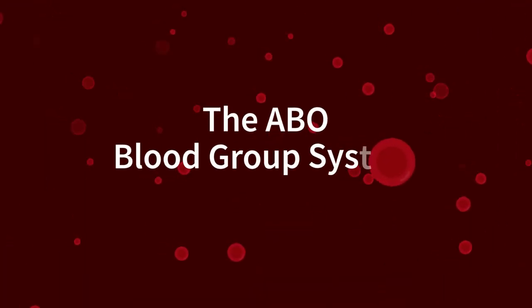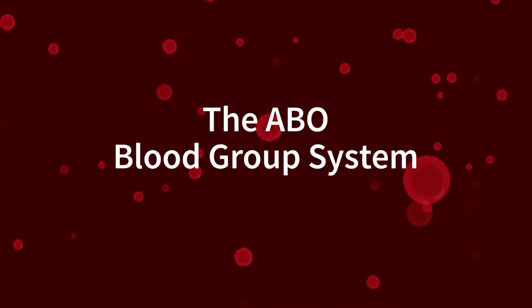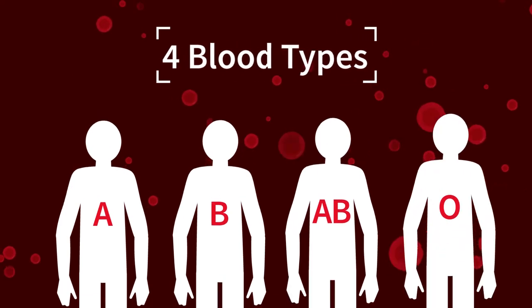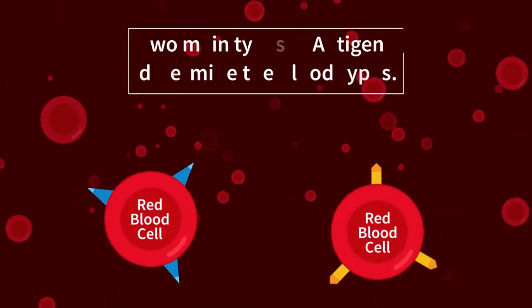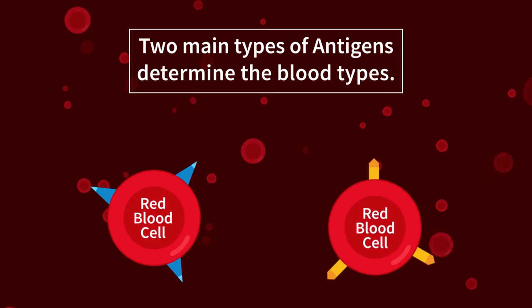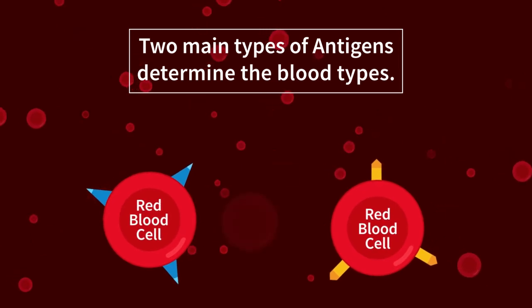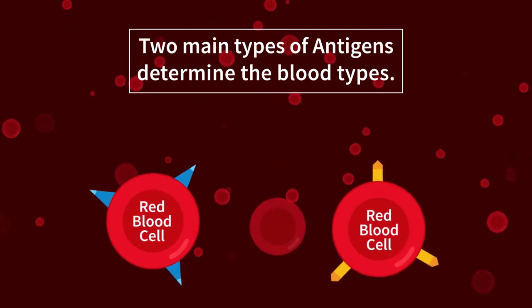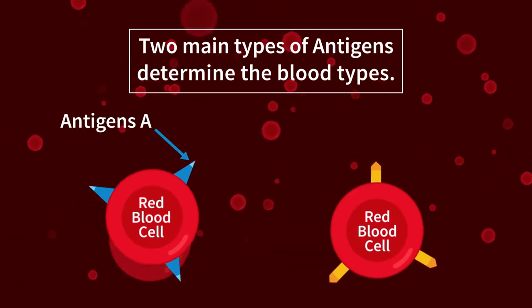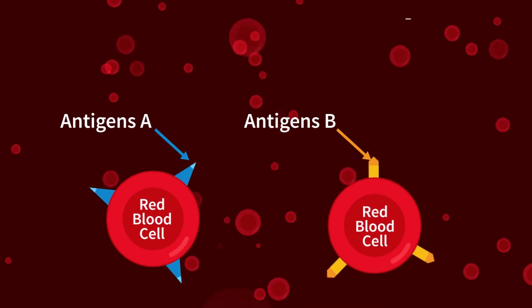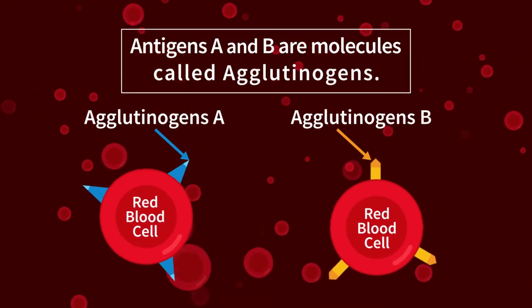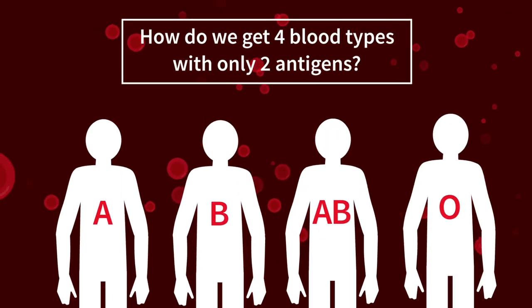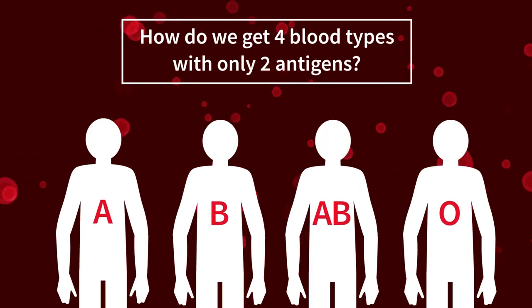The ABO Blood Group System has four blood types. The blood type is determined by the presence or absence of two different antigens on the surface of the red blood cells: antigens A and B. Antigens A and B are molecules called agglutinogens. How do we get four blood types with only two antigens?